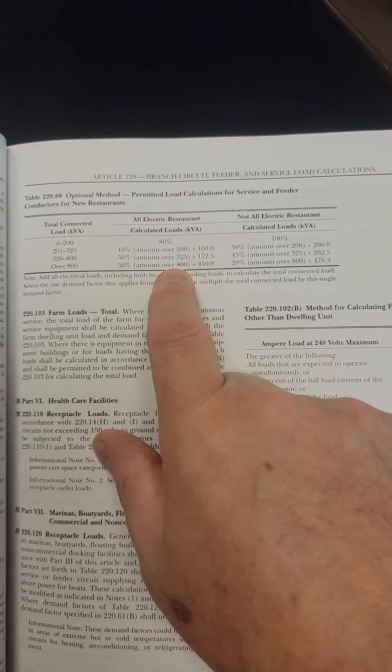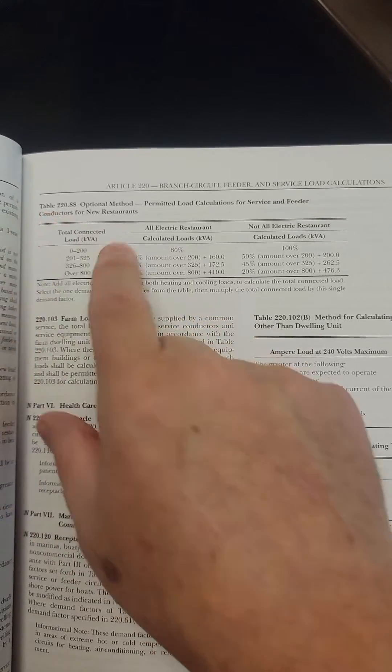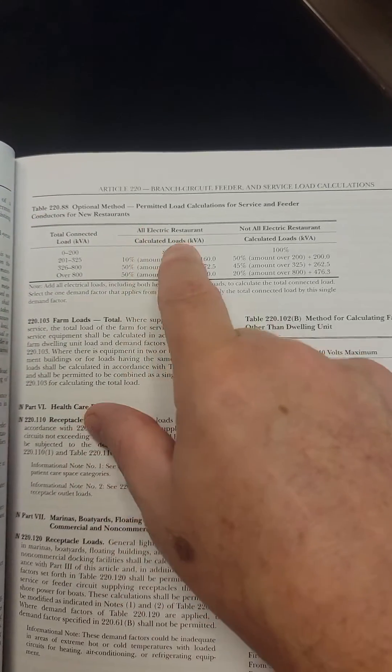Hey folks, we're looking at the 2023 edition of the National Electrical Code. A lot of people are confused by how to do the optional method for an all-electric restaurant.